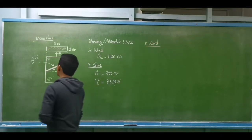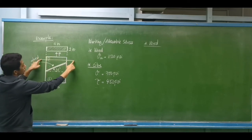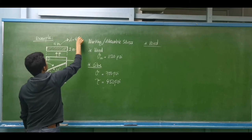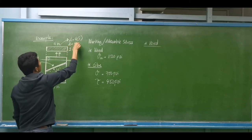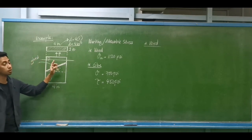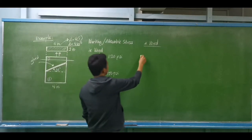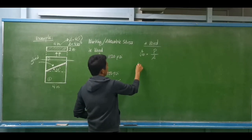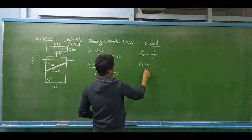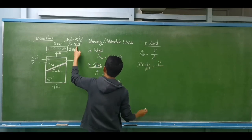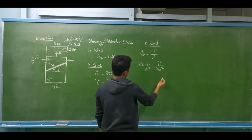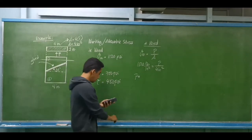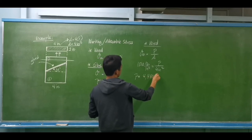First, consider the wood portion. The cross-sectional area of the wood, if we cut on that portion, gives us four times one, so the area is four square inches. Working stress equals force divided by area, so 1120 pounds per square inch equals P divided by four square inches, giving P equal to 4,480 pounds.